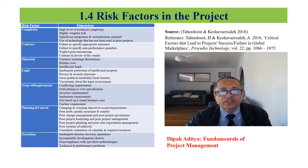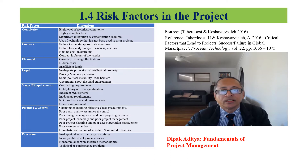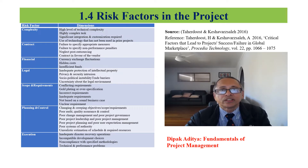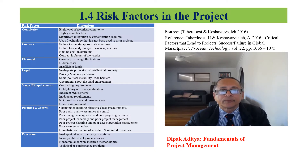Risk factors in the project are related to project complexity, contract, financial, legal, scope and requirement, planning and control, and execution. Inadequate protection of intellectual property is a risk — for example, building information modeling in construction. Conflicting requirements, poor governance, and non-compliance with methodology in the execution phase are also key risks.